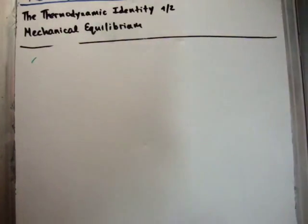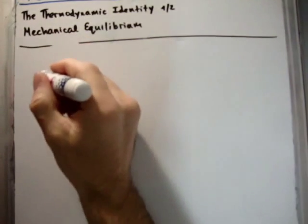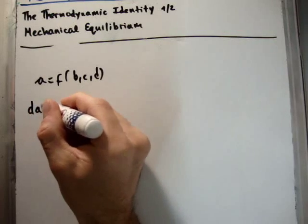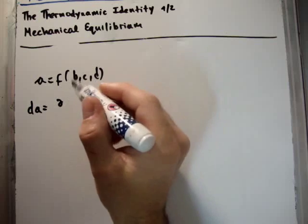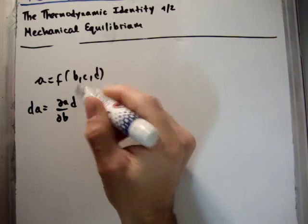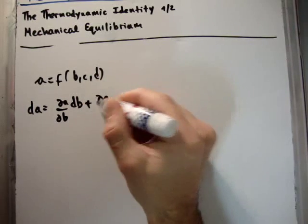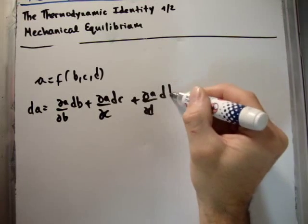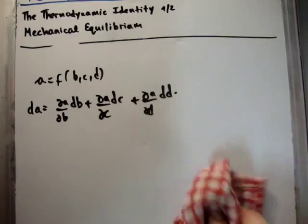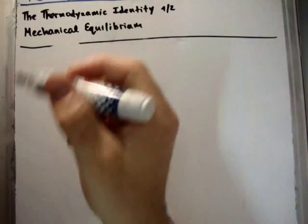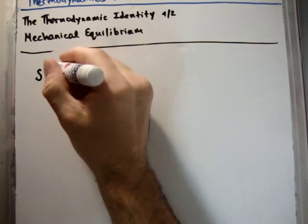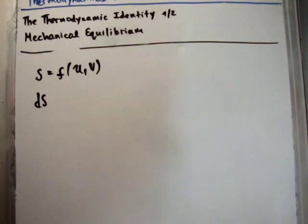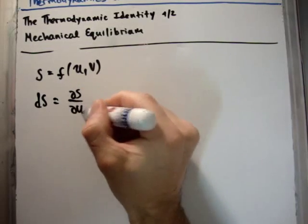Now we're ready to derive the thermodynamic identity. This essentially comes from properties of derivatives: if A is a function of B, C, and D, then dA = (∂A/∂B)dB + (∂A/∂C)dC + (∂A/∂D)dD, and so on for any number of variables. We found that entropy is a function of both internal energy and volume, so that motivates us to write the infinitesimal change in entropy as dS = (∂S/∂U)dU + (∂S/∂V)dV.